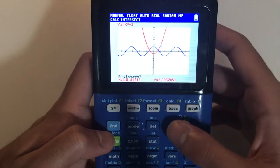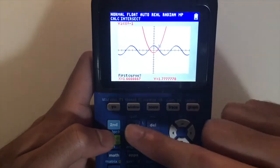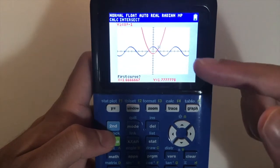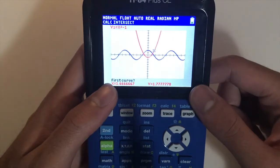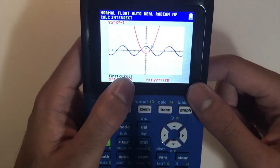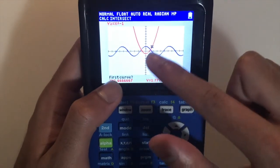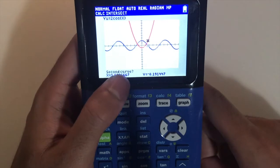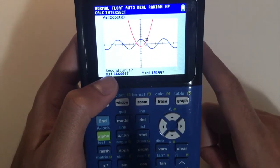So how do we figure out the point of intersection? When you want to find the point of intersection between two different functions, you just want to press enter to answer this first question. So is this one of the curves that we're looking at? Yes, so just press enter. Is this the second function that we're looking at? Yes, so we press enter again.